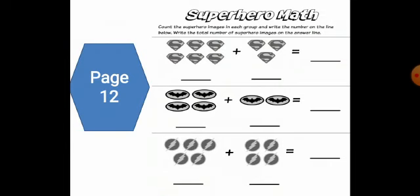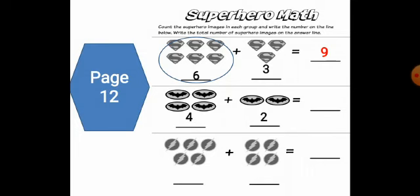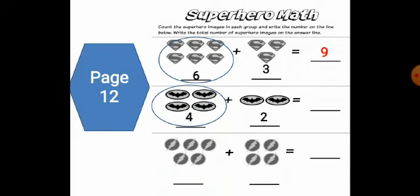Page number 12. We should write the numbers before we start the addition game. Here we have one, two, three, four, five, six — plus three. Which number is bigger? Six is bigger. Six in the mind, three on the hand. After six: seven, eight, nine. Good job. Next one: four plus two. Which number? Circle the bigger number — number four. Four in the mind, two on the hand. After four: five, six. Good job.